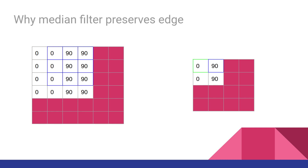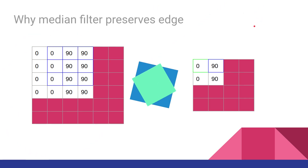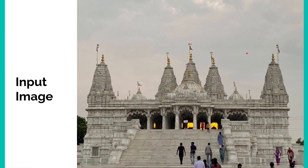If you want to know about techniques to keep the output image size the same as the input image size, go to the top-right corner and view the video on mean filter. For today's video we will use this example image, which is very sharp and without noise.